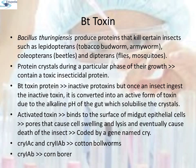Specific Bt toxin genes are isolated from Bacillus thuringiensis and incorporated into several crop plants such as cotton. The choice of genes depends upon the crop and the targeted pest, as most Bt toxins are insect group specific. The toxin is coded by a gene named cry. For example, the protein encoded by the genes cry1ac and cry2ab controls the cotton bollworm, and cry1ab controls the corn borer.